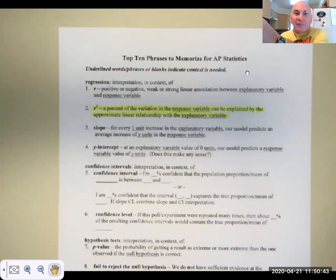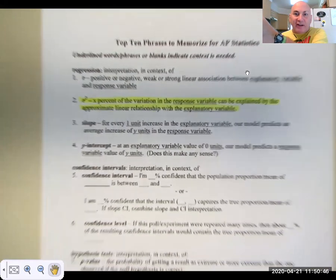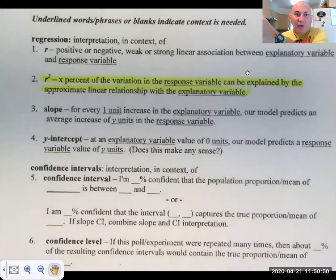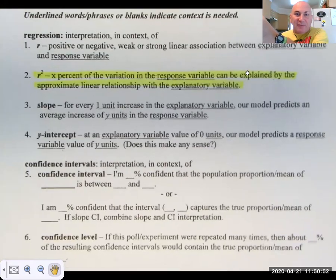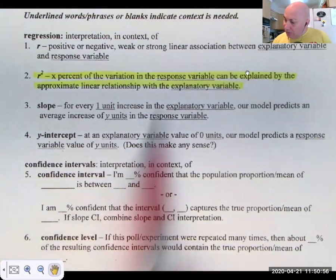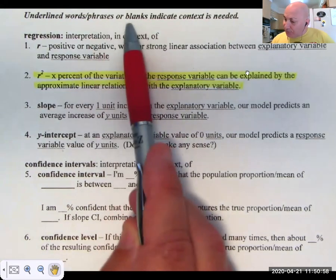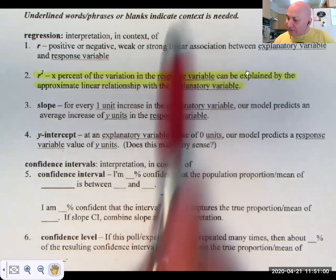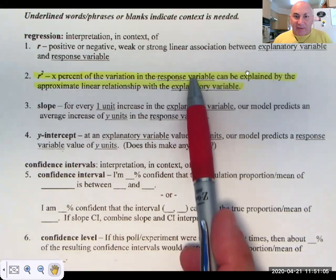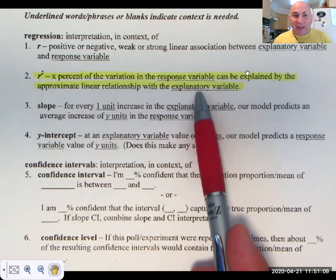From our phrasing handout. Now again, this is from Lee Kuchera, the goddess of AP stats. If we're trying to explain something about r squared, underlined words or phrases indicate where context is needed. So we would explain in here what is the response variable y, and what is the explanatory variable x.